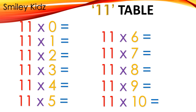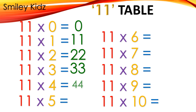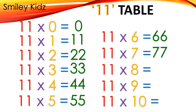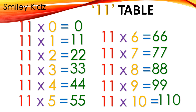Table 11: 11×0=0, 11×1=11, 11×2=22, 11×3=33, 11×4=44, 11×5=55, 11×6=66, 11×7=77, 11×8=88, 11×9=99, 11×10=110.